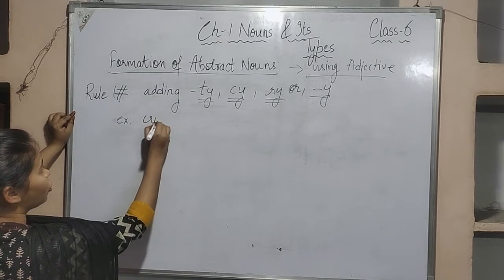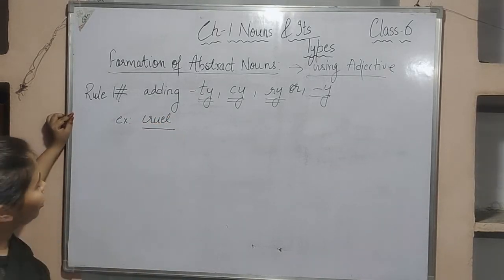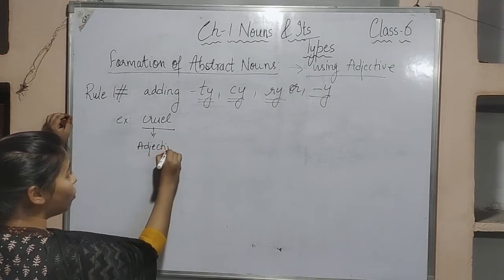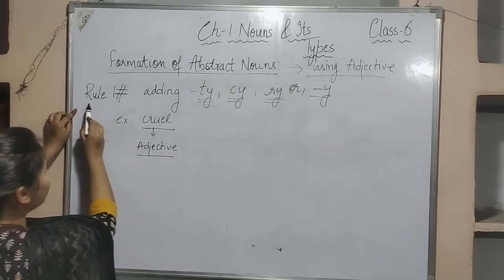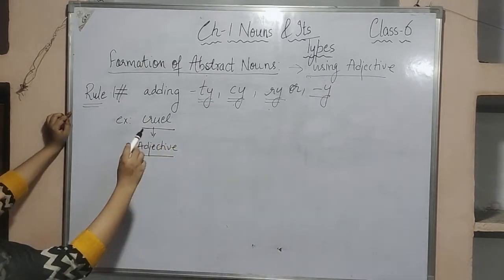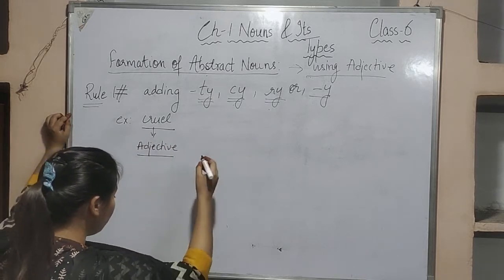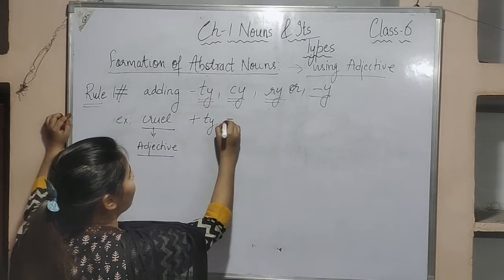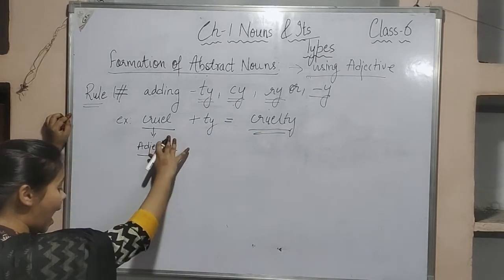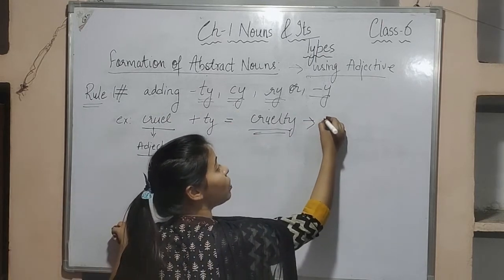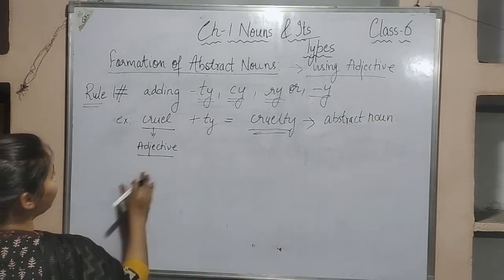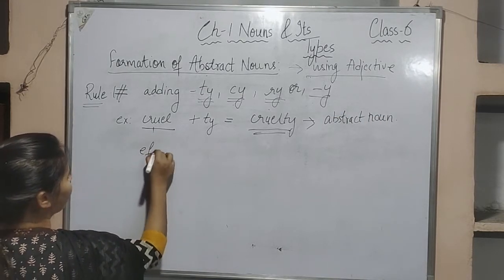For example, the word 'cruel' is an adjective. When we add '-ty' to 'cruel,' it converts into 'cruelty,' which is now an abstract noun — the adjective has been converted into an abstract noun. Similarly, 'efficient' is an adjective. To convert it, we remove the 't' and add '-cy,' giving us 'efficiency,' which is an abstract noun.